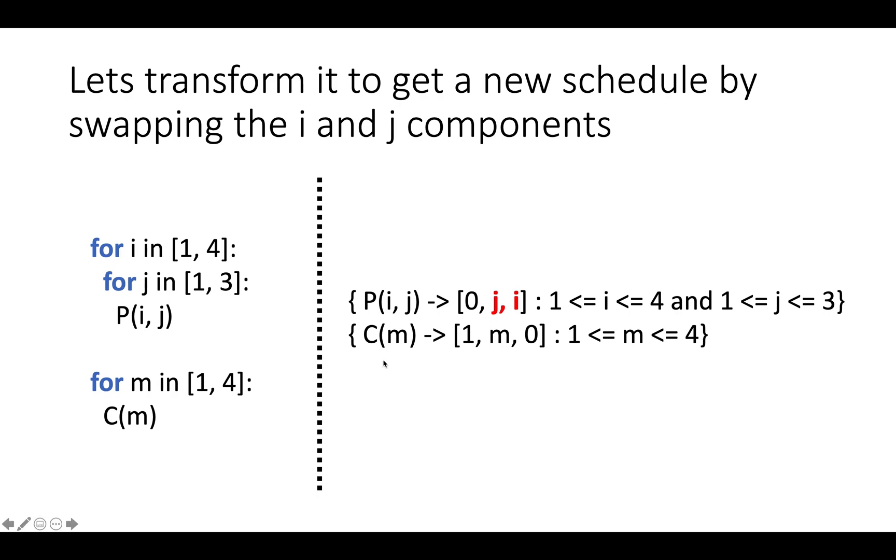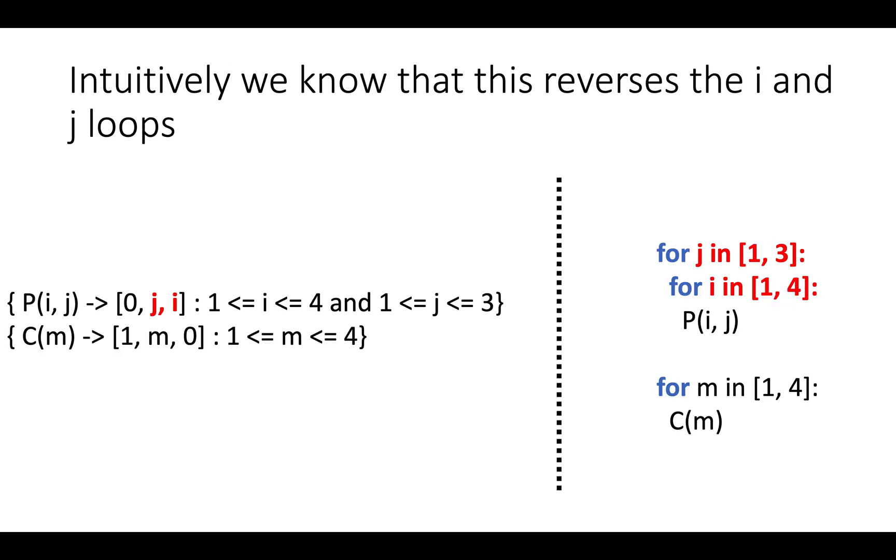Now let's suppose we transform this schedule. We start operating on the schedule that we have, and we do that by reversing i and j. So we swap the i and j components of the times when statement P is executed. Now intuitively, we know that this operation reverses the i and j loops.